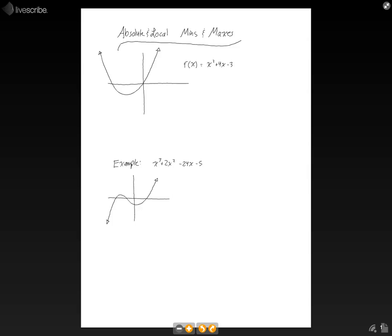Up at the top, I have a rough sketch of the function x squared plus 4x minus 3. And we are going to find the mins and maxes of it. Since this function is a parabola, we know that it has no absolute maximum.